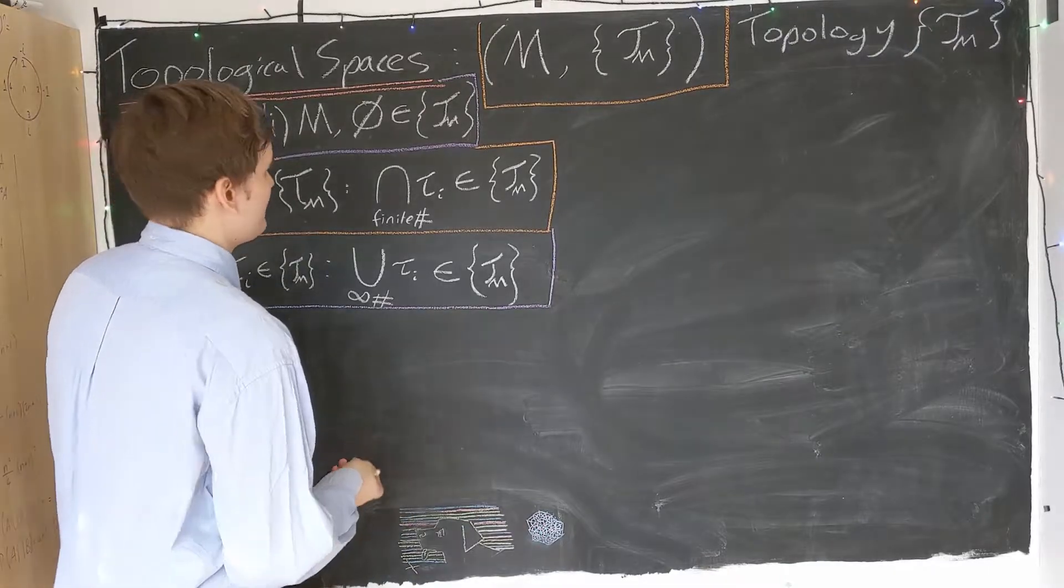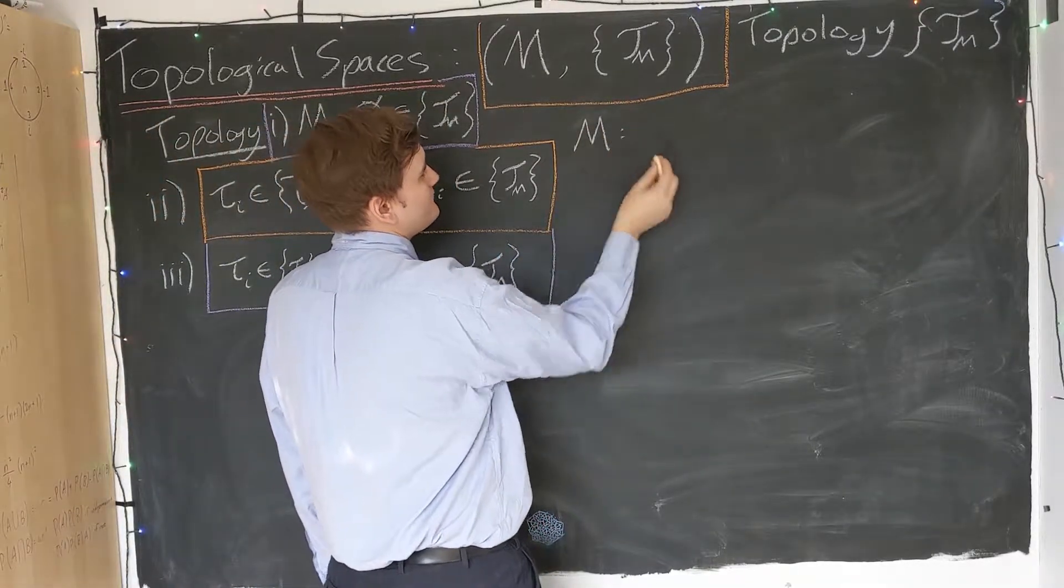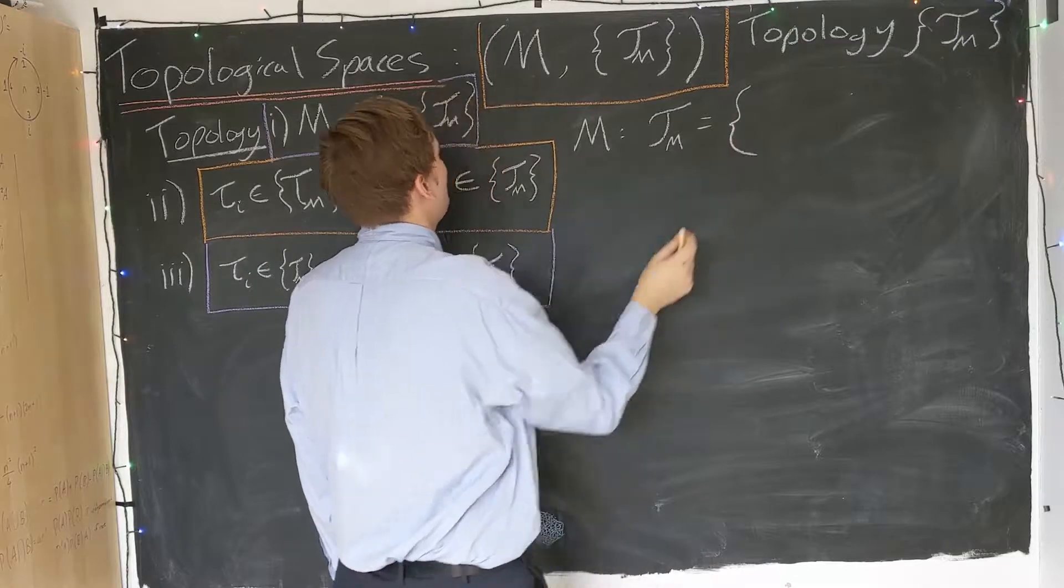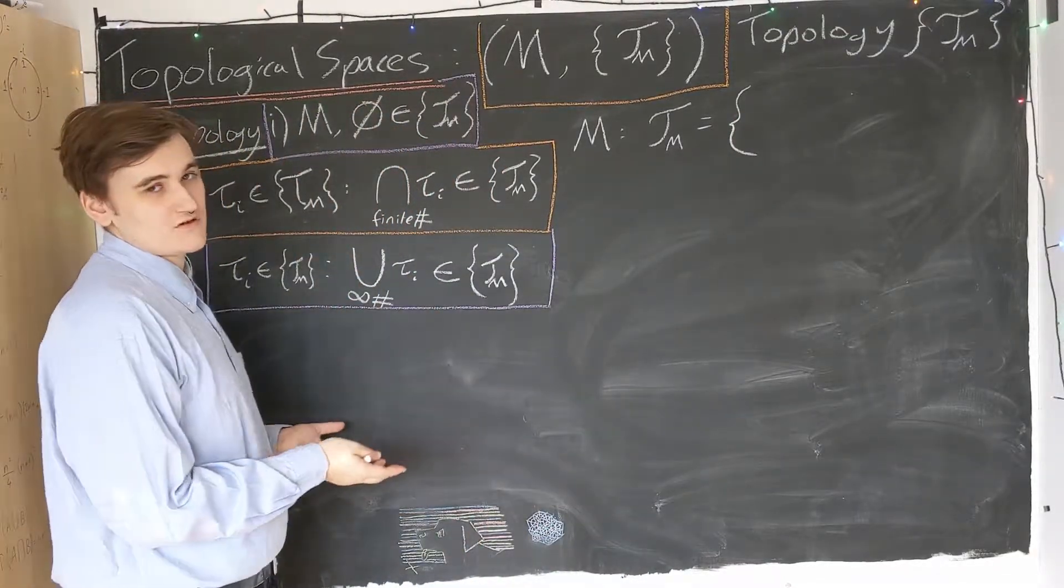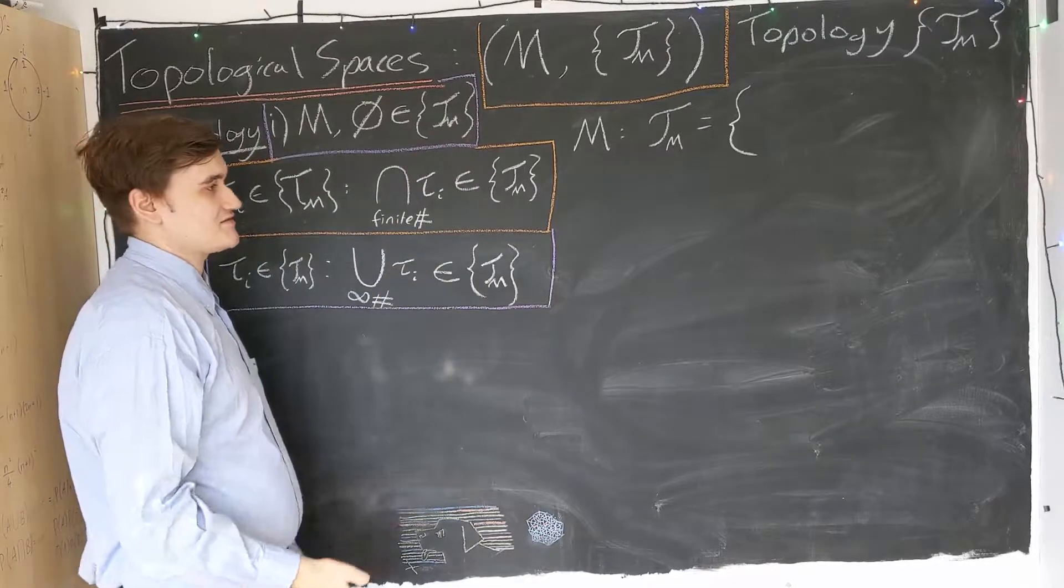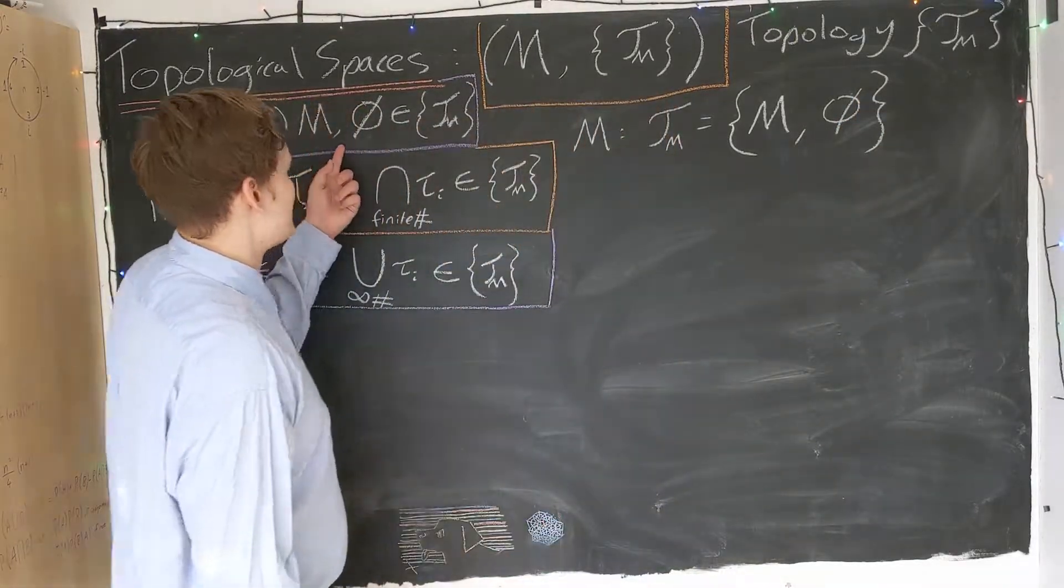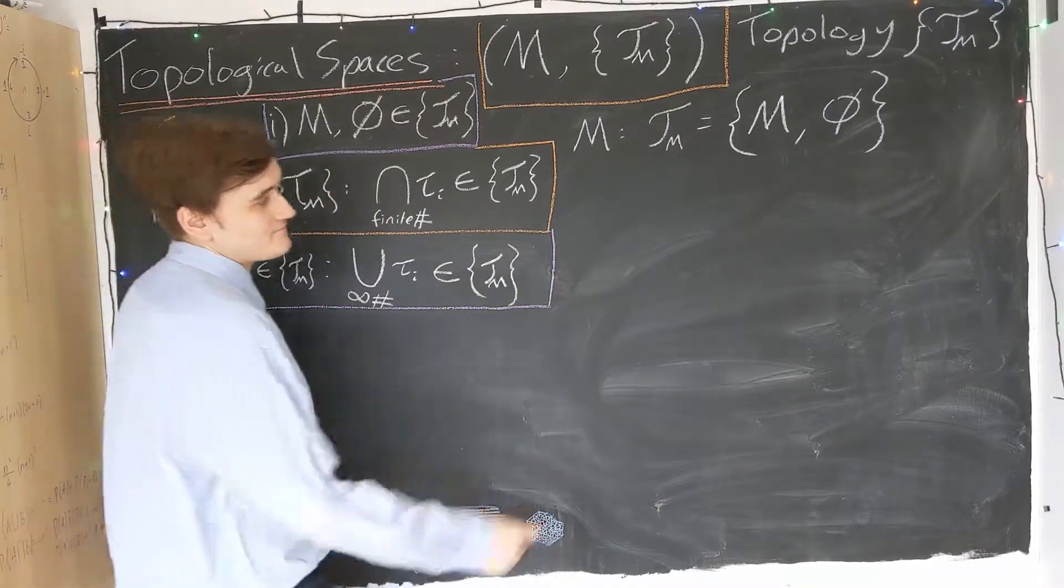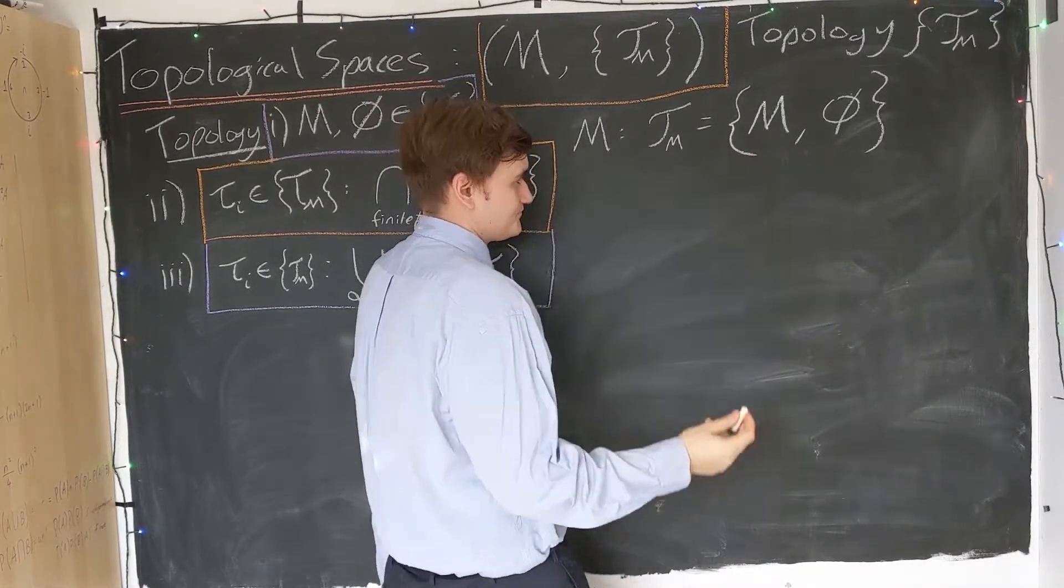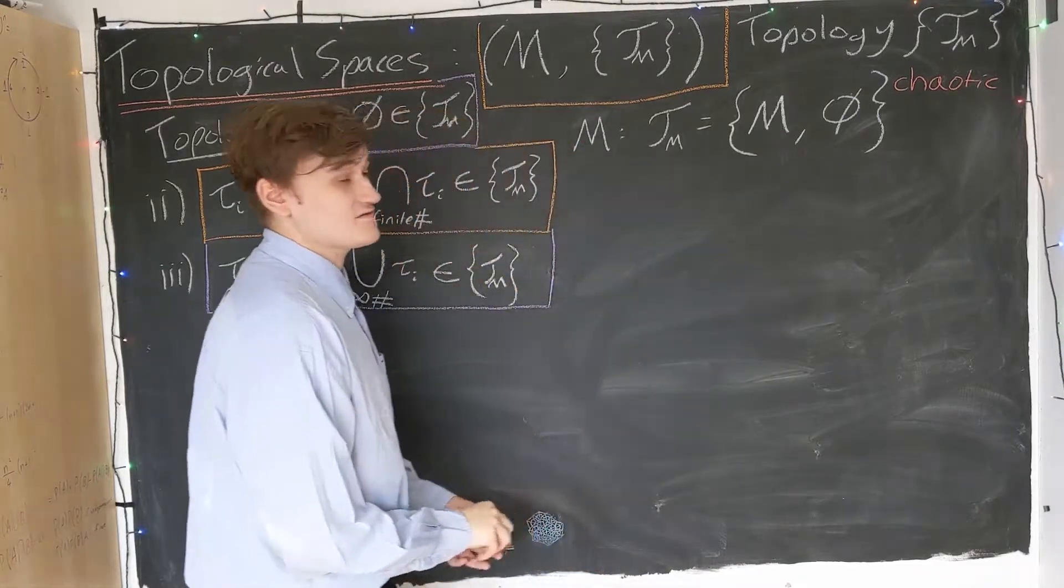So how could this possibly look? How could we construct such a set? Well, two of the easiest ones to construct: if we consider a set M and we consider its topology to simply be the minimum, the most minimal topology we could construct. We know the set and the empty set have to be in the topology, so let's just consider that case. Just the set and the empty set. Well, it's obviously satisfying the first axiom. The second two are also easy to see: the set intersected with the empty set is just the set, and the same with the union, and they both lie in the topology. So this is sometimes called the chaotic topology, because it turns out to be not very useful and it's a bit of a mess.